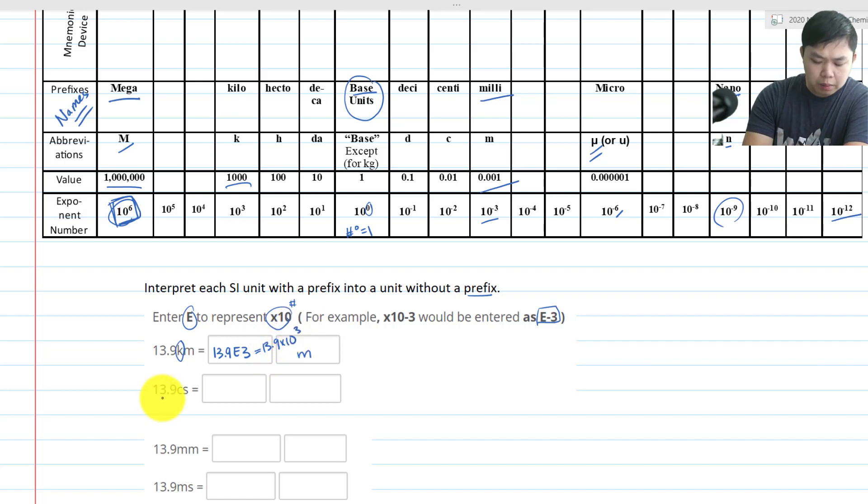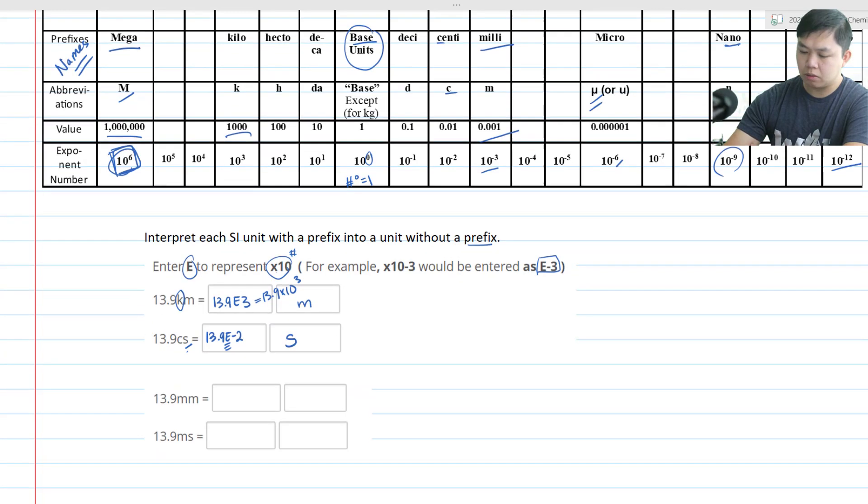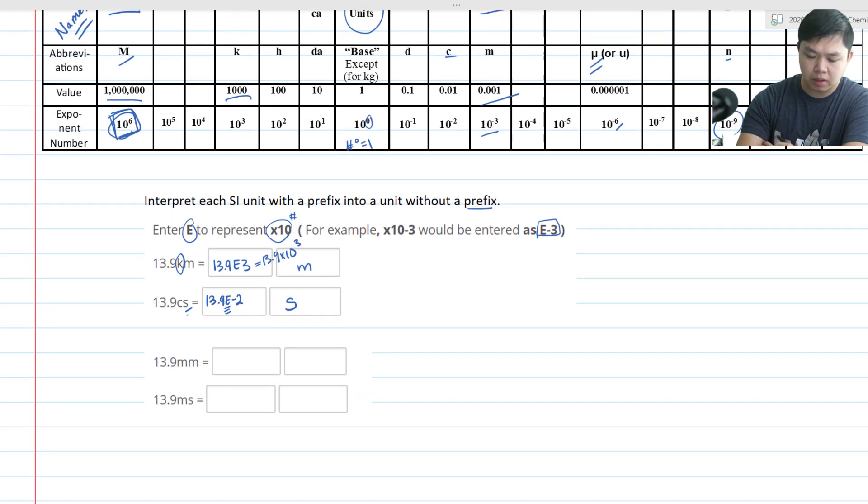What about 13.9 CS? What's C stand for? C is centi. So that is centisecond. That's used to measure time. So what's centi? 10 to the negative 2. So we have 13.9 E times 10 to the negative 2. So we write E right there. So what's the unit without the prefix? Second. That's the fundamental unit for time or the base unit for time.